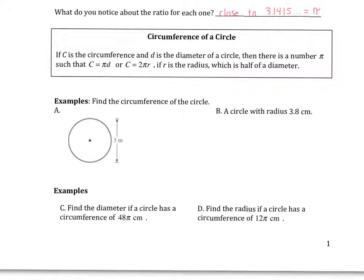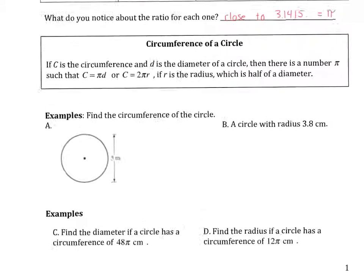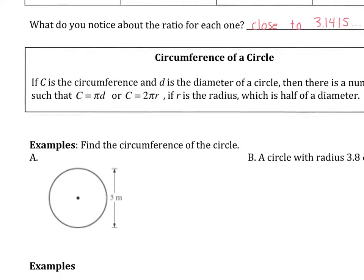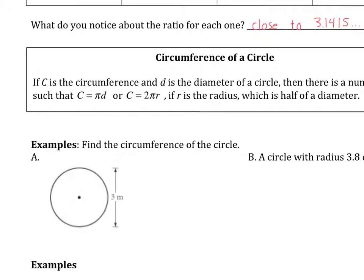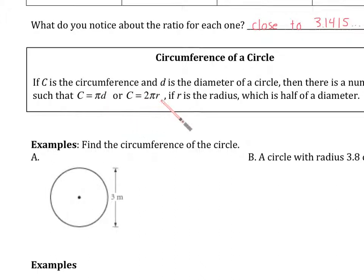One of the first things we want to note here is that the circumference of a circle — we've already been introduced to this — but we have two formulas. One says circumference is pi times d for diameter, or pi times 2r, r being radius, because radius is half the diameter.